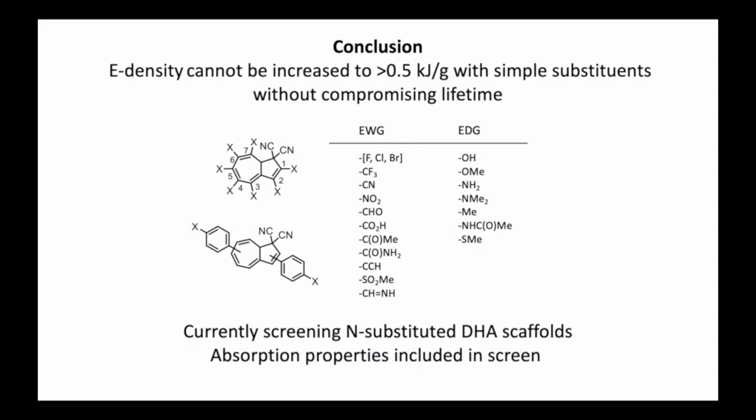You have to do other things to the DHA scaffold. One thing we're looking at now is to introduce nitrogen atoms in the scaffold to see how that affects these parameters. Obviously, a lesson learned from this study is that in screening we also have to include the absorption properties along with the energy density and the back reaction barrier. That's what we're working on now. Okay, that's it for me. Thank you very much for your attention.